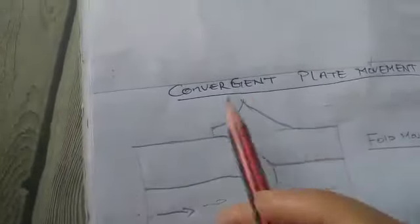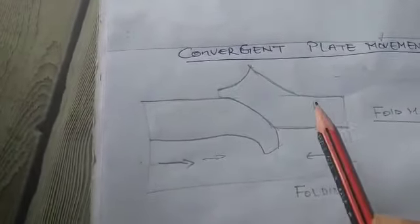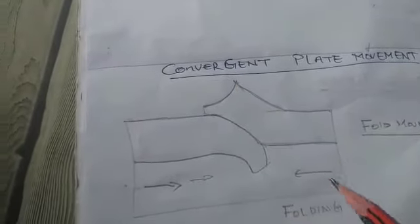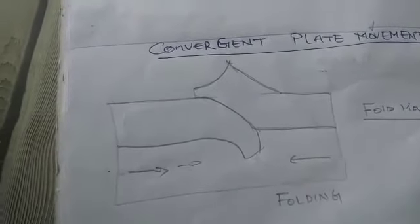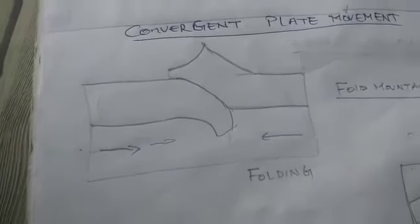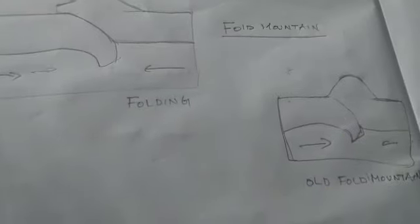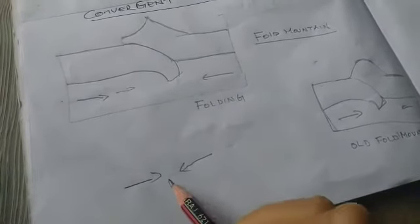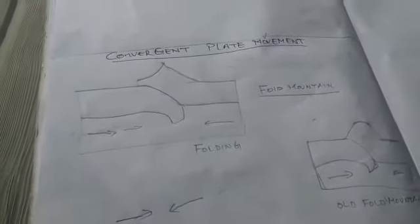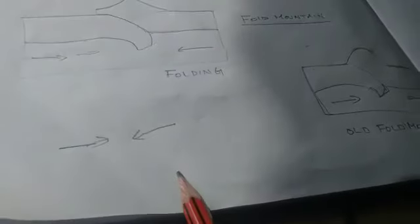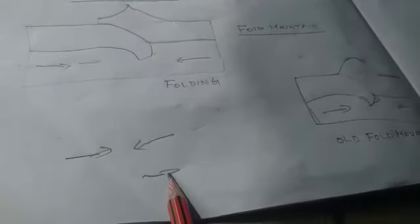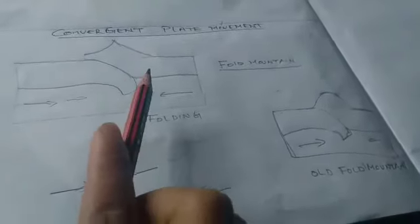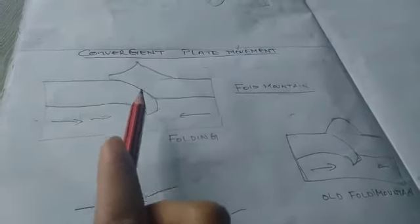Young fold mountains are very high and have pointed peaks. They were formed about 60 to 70 million years ago, and are younger than the old fold mountains. Convergence plate movement means when two plates move towards each other and collide, forming features such as fold mountains.